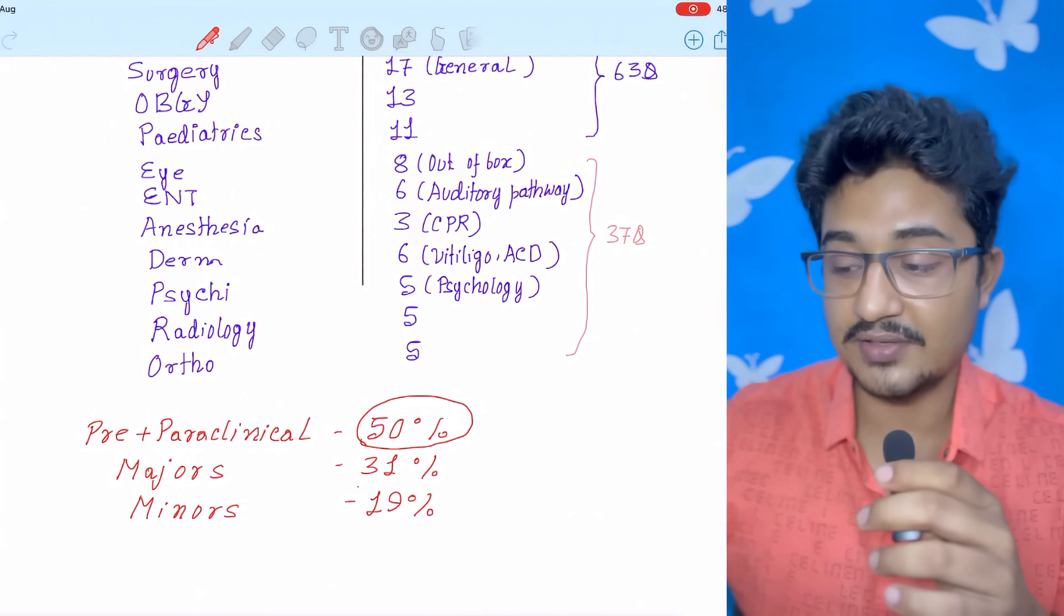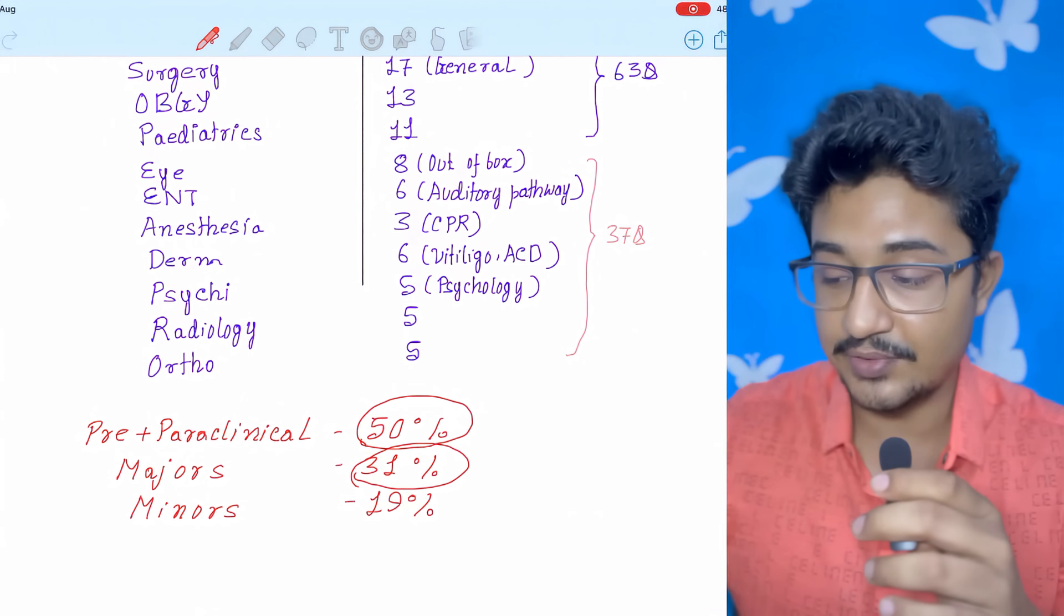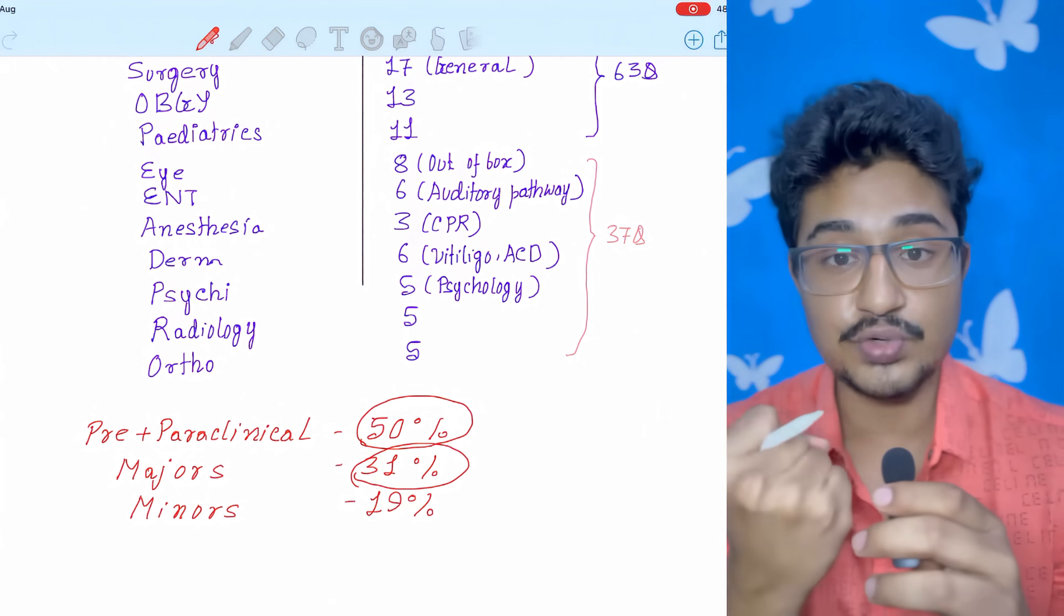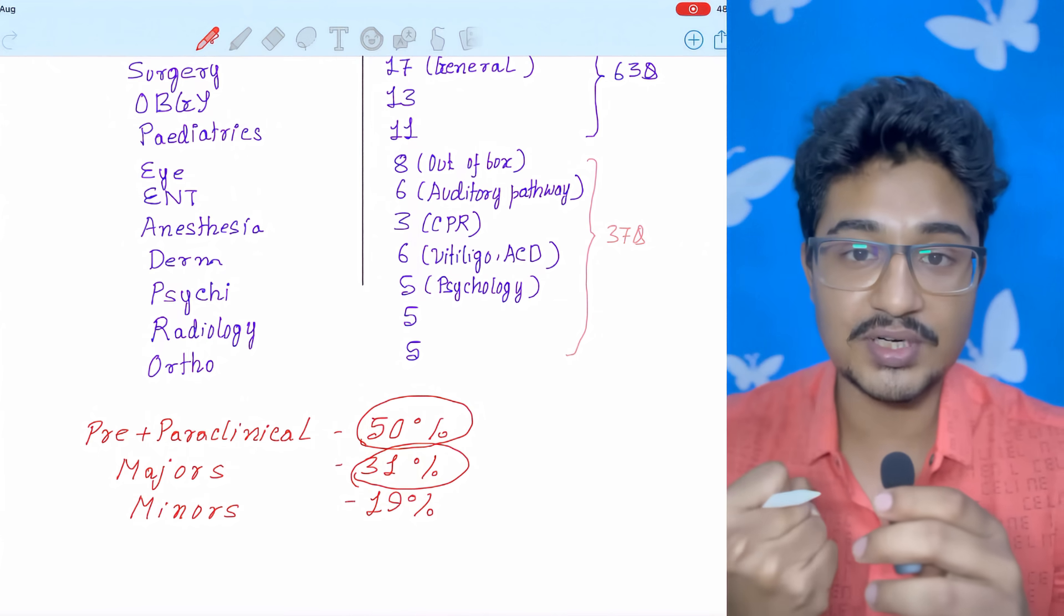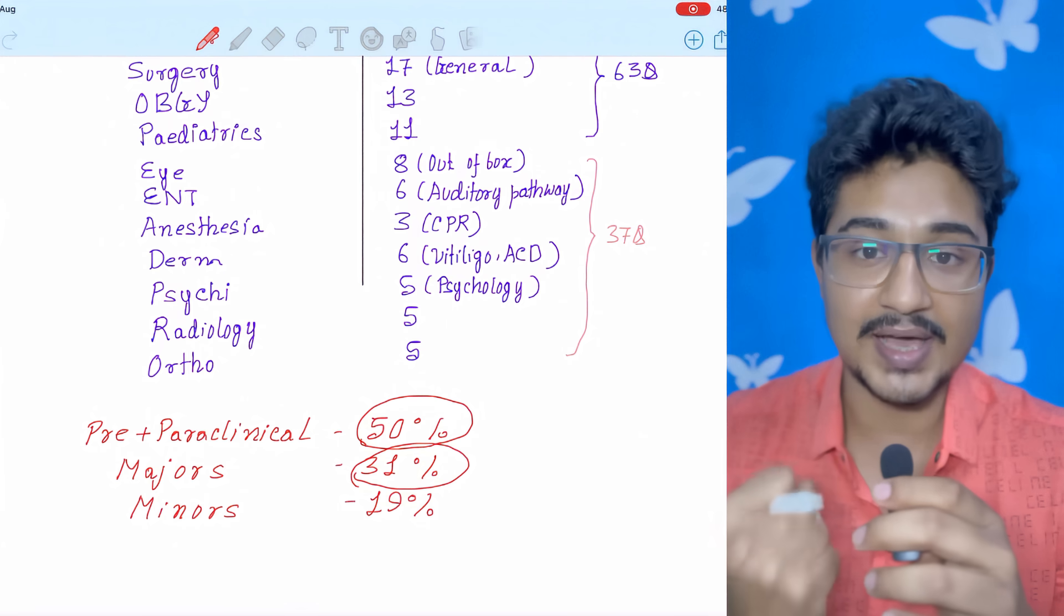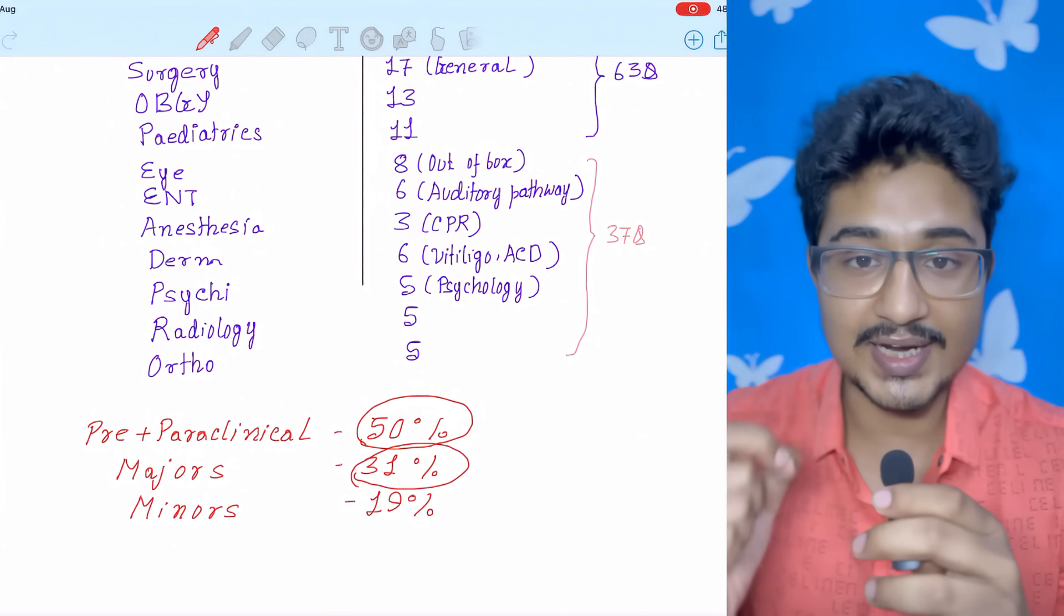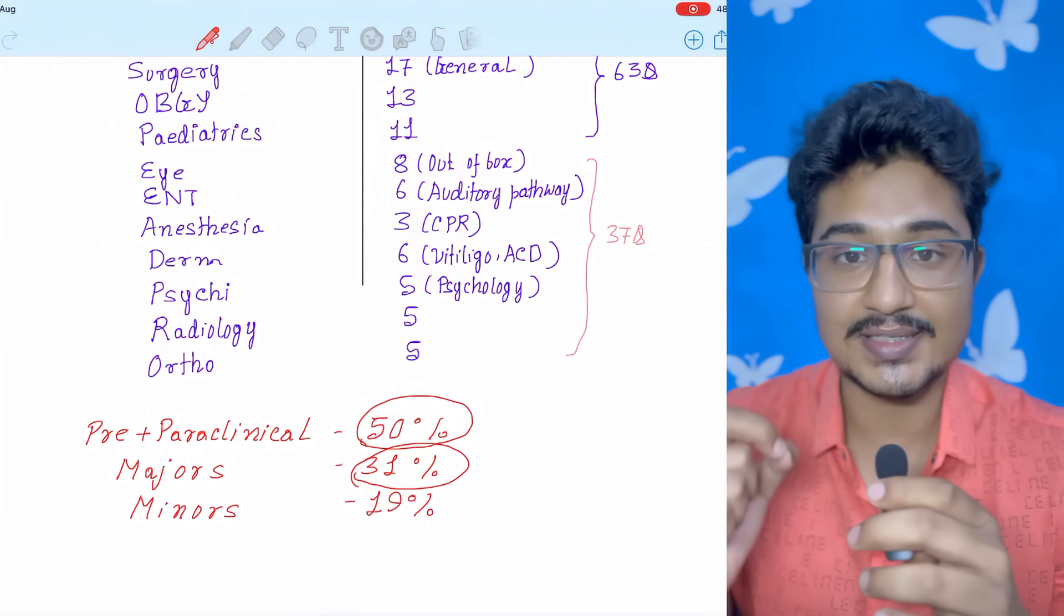And also the major four subjects constitute 31% of the questions. So you need to have a really strong hold over the major four clinical subjects and the pre and paraclinical subjects to get a desired rank in INICT exam.